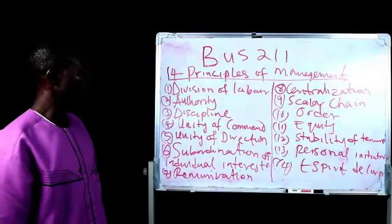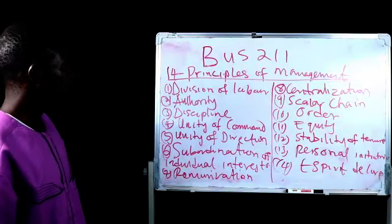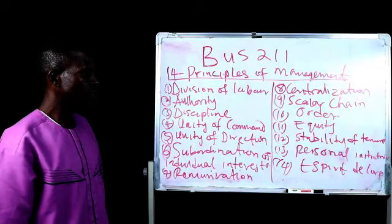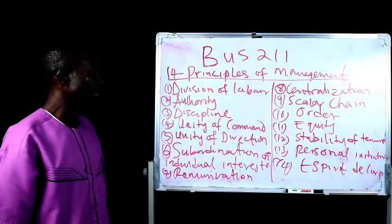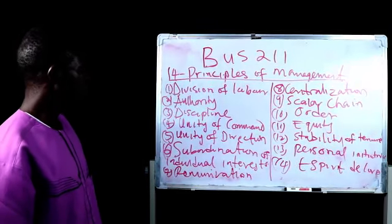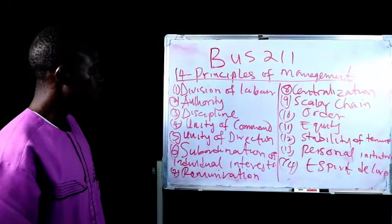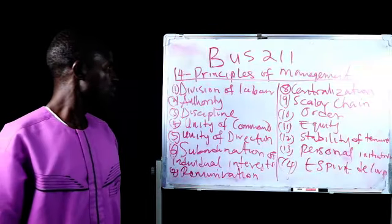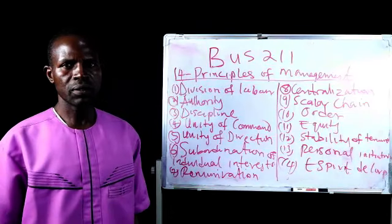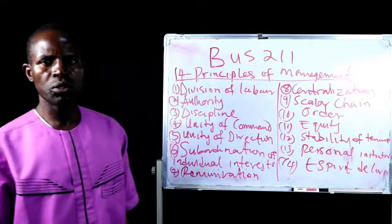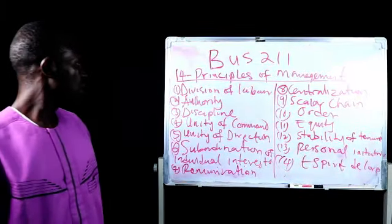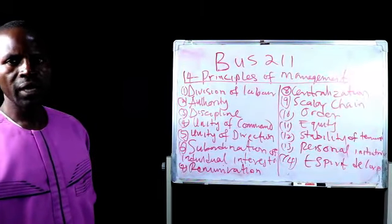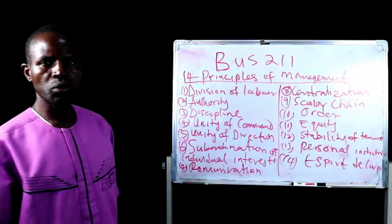We have the principle of authority. According to Henry Fayol, the principle of authority is to ensure harmony in administration. To ensure harmony, there is a need to issue orders to those who are to carry out functions and responsibilities. Authority itself is the right to command obedience from the subject — it is the right to give instructions to employees, and for employees to carry out such instructions accordingly.